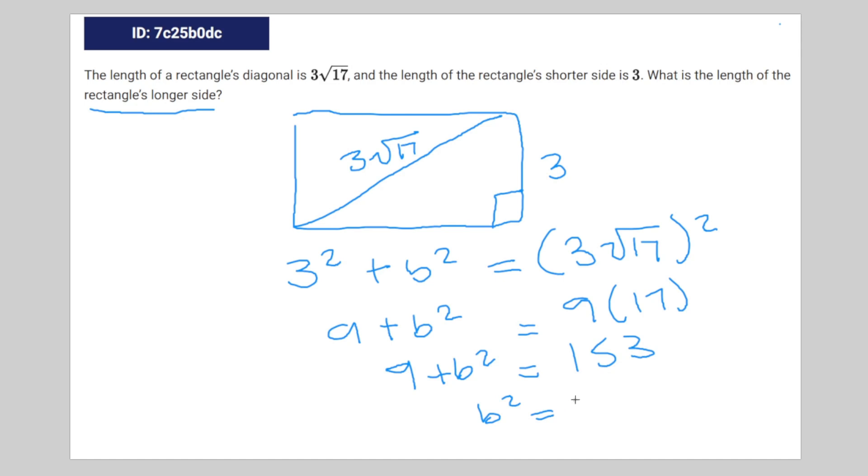So b squared is equal to - move the 9 to the other side, it becomes negative - b squared is equal to 144, and b is equal to 12.